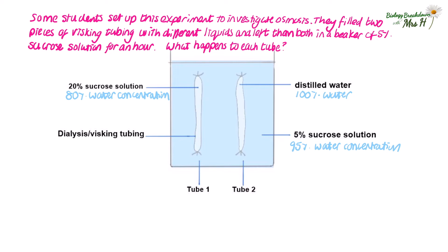Let's look at tube one first. Tube one contains an 80% water concentration and is sitting in a 95% water concentration. Is there a higher water concentration inside or outside of the tubing? It's outside. So water molecules will move from a high water concentration outside the tube to a lower water concentration inside the tubing through a partially permeable membrane, and the tube will increase in volume and mass.